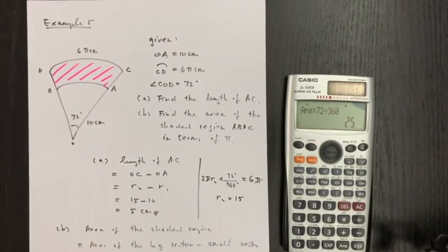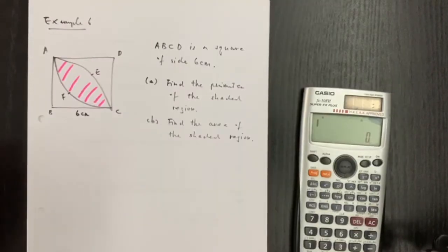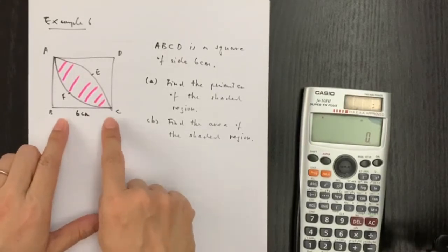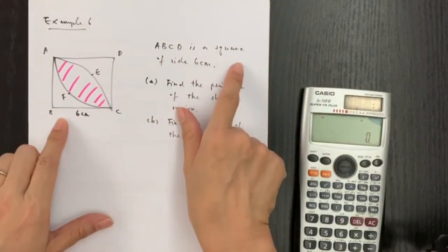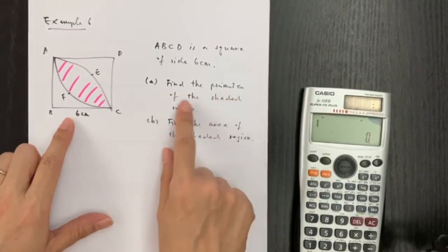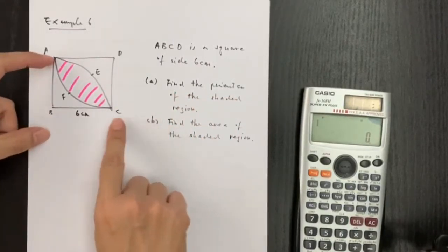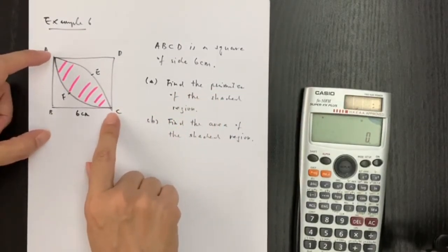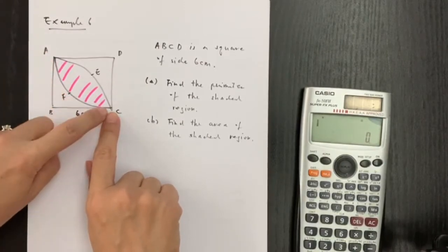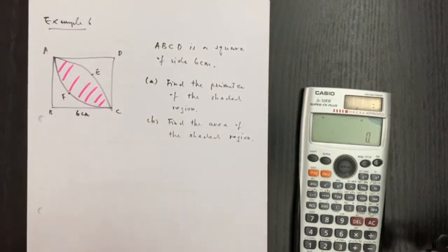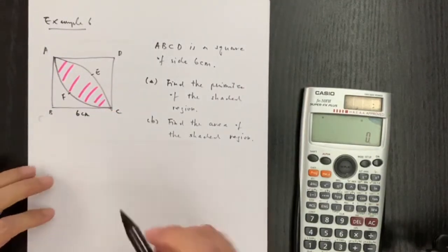Next we have the final example, Example 6. ABCD is a square with side 6 cm. For part a, we need to find the perimeter of the shaded region. The perimeter of the shaded region consists of two parts: the arc length for AFC and the arc length of AEC.